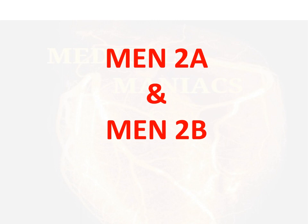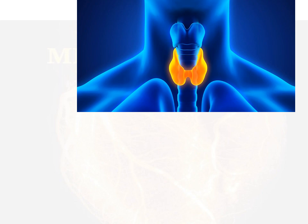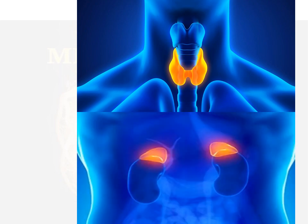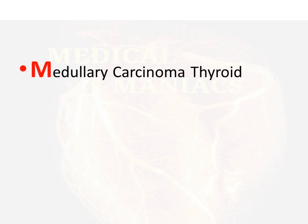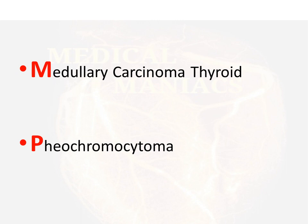Coming to MEN2A and MEN2B — MEN2A is also known as Sipple syndrome. Remember, MEN2A and MEN2B have two things in common: medullary carcinoma of thyroid and pheochromocytoma. The two organs of interest are the thyroid and the adrenal gland, represented by the letters M and P.